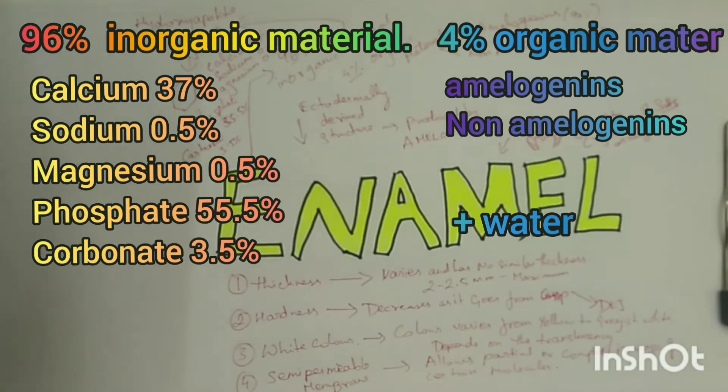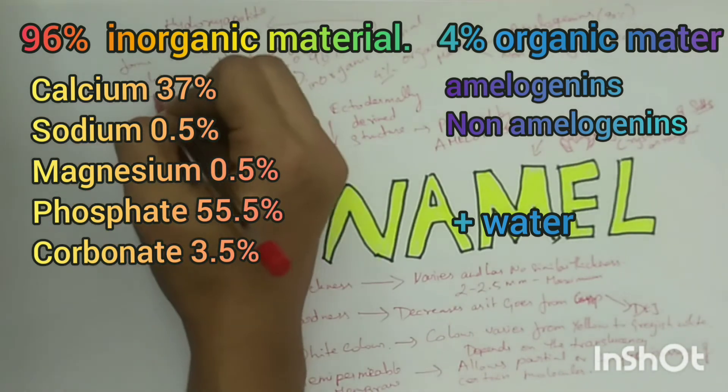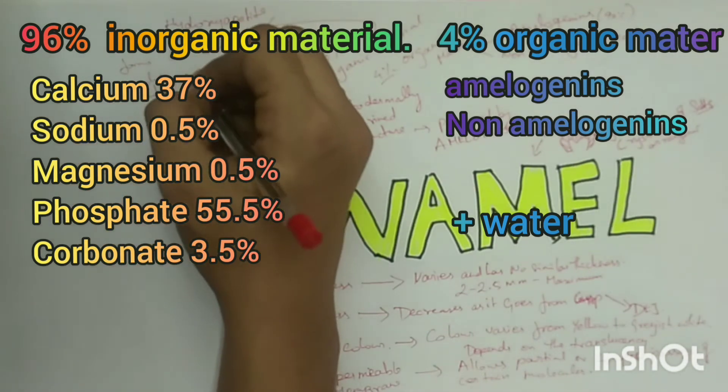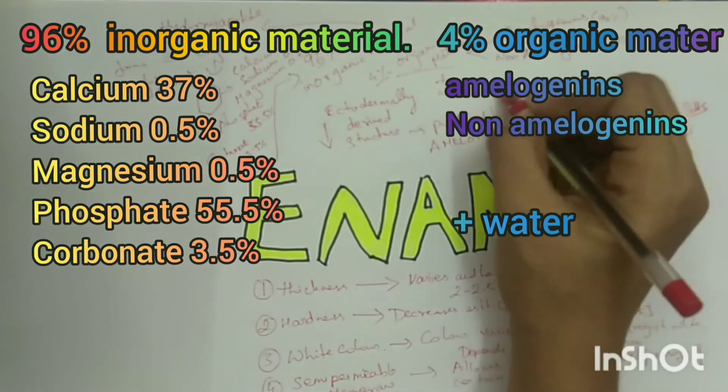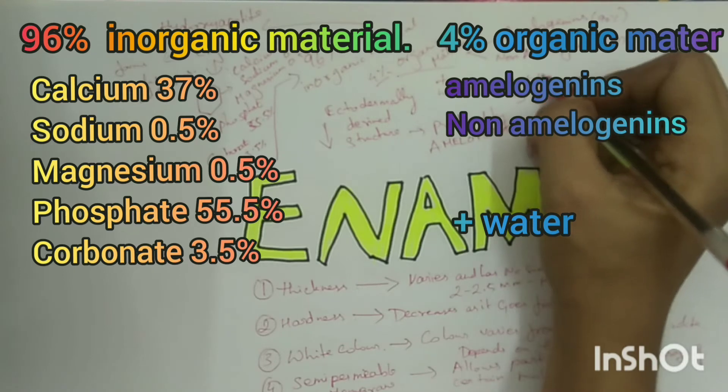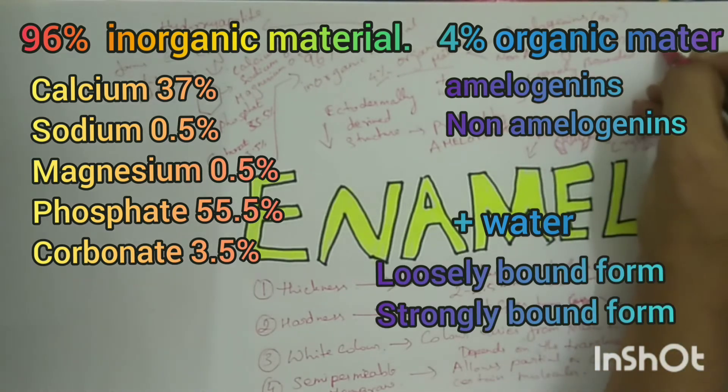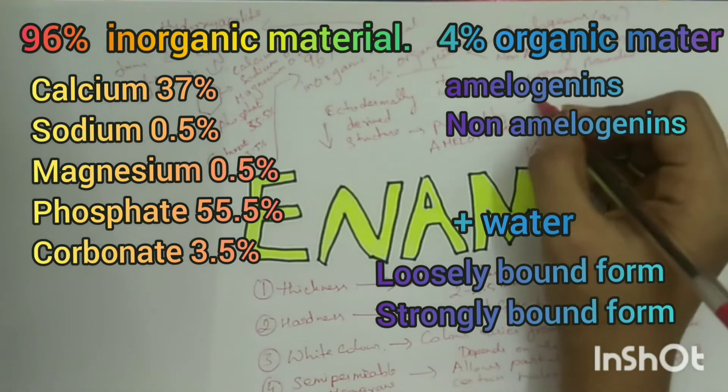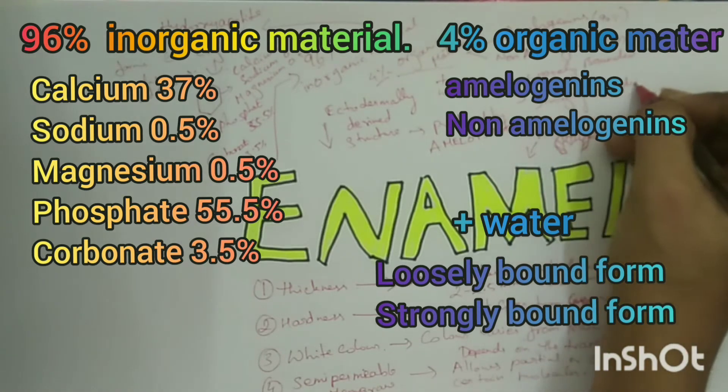These hydroxyapatite crystals are arranged to form enamel rods or prisms. Water is present in enamel in two physical phases: loosely bonded form of water and strongly bonded form as part of apatite crystals.